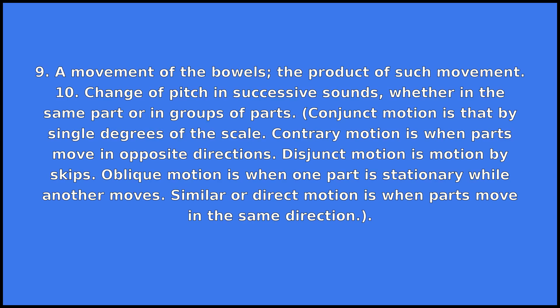Conjunct motion is that by single degrees of the scale. Contrary motion is when parts move in opposite directions. Disjunct motion is motion by skips. Oblique motion is when one part is stationary while another moves. Similar or direct motion is when parts move in the same direction.